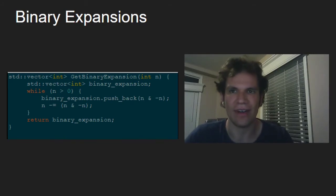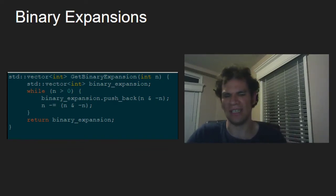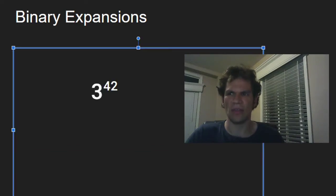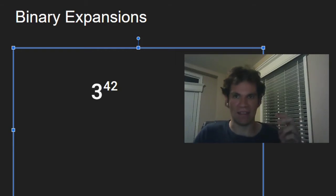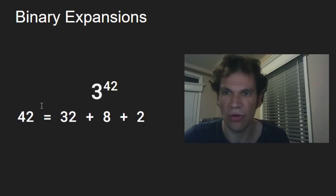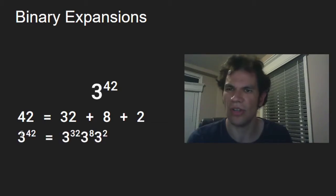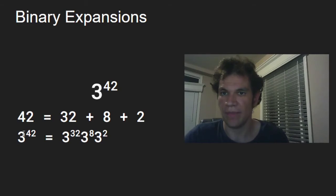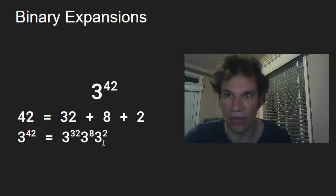The most straightforward that I could think about is the binary exponentiation. For example, if we want to know how much is 3 to the power of 42. We don't need to multiply 3 by itself 42 times. Because we know that 42 equals 32 plus 8 plus 2. So 3 to the power of 42 is 3 to the power of 32 times 3 to the power of 8 times 3 to the power of 2.